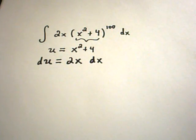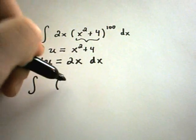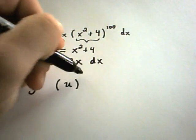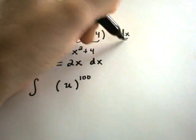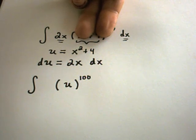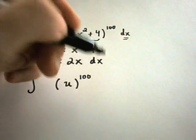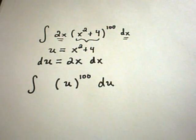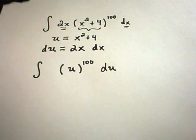And notice the stuff inside the parentheses. Now if I go to rewrite this, we relabeled x squared plus 4. That's what we called u. So now I have u to the 100 power. And notice my 2x dx that's left over, because again, I've replaced the u squared plus 4 raised to the 100 power. The only thing that's left over is the 2x dx term. That's exactly what du is equal to. And I'm just going to put my du out to the right.